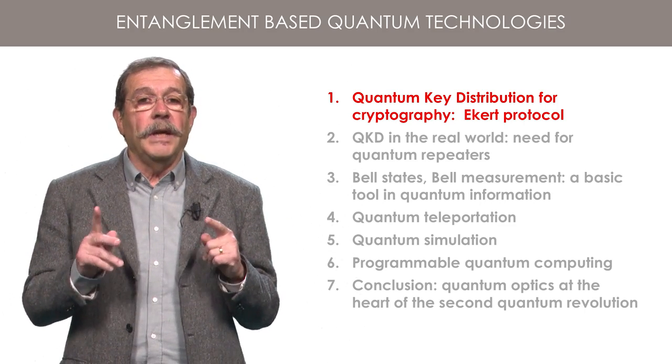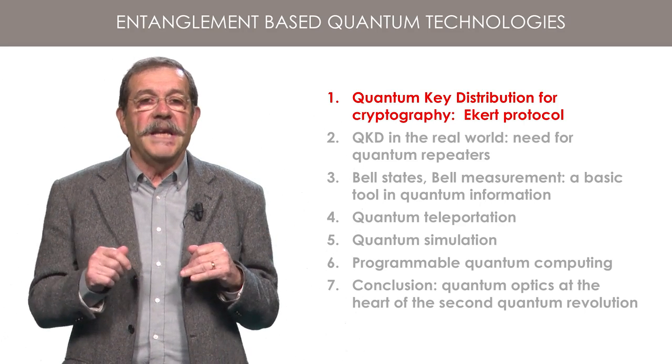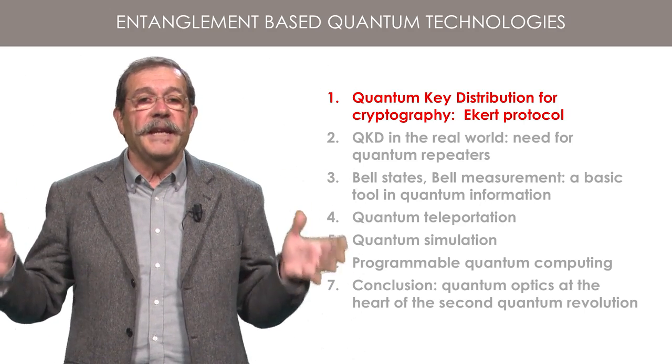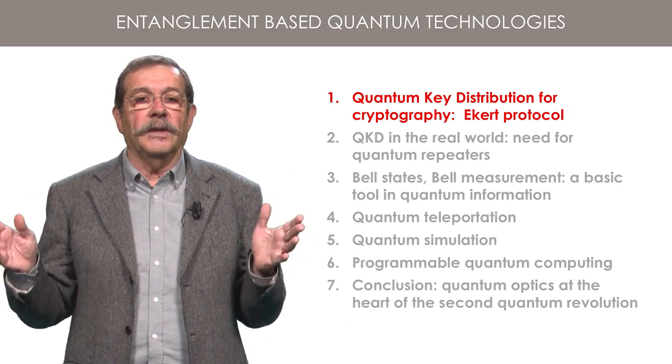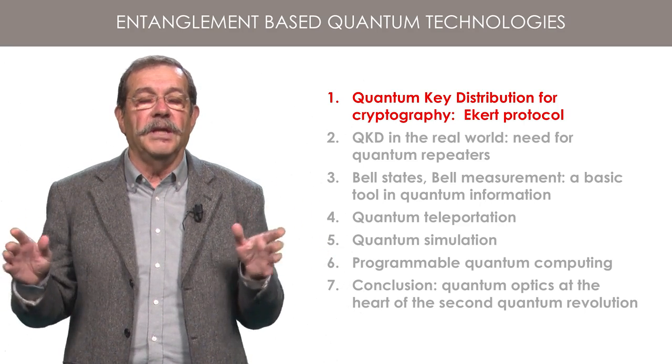Today, you will discover the method invented by Arthur Eckert, based on two entangled photons, to generate simultaneously two identical keys without the possibility of a third copy being produced.